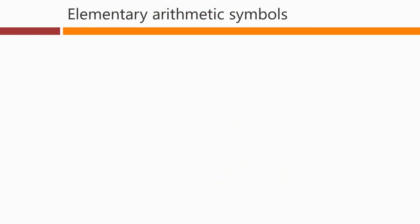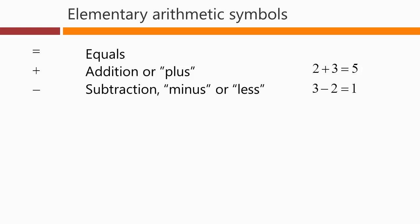We're going to look at the very elementary arithmetic symbols here. The first one that we undoubtedly need is the equal sign. We need it for any equation. We're saying what's on the left is equal to what's on the right. The plus sign for addition, as in 2 plus 3 equals 5 here. The subtraction sign, which we might also call the minus sign, or we might say 3 minus 2 equals 1 or 3 less 2 equals 1.